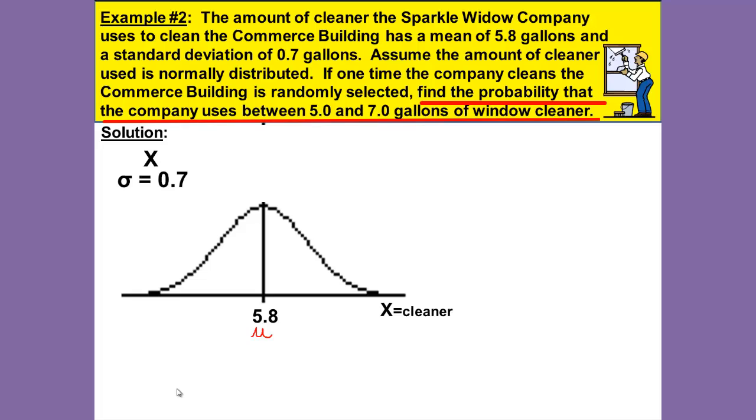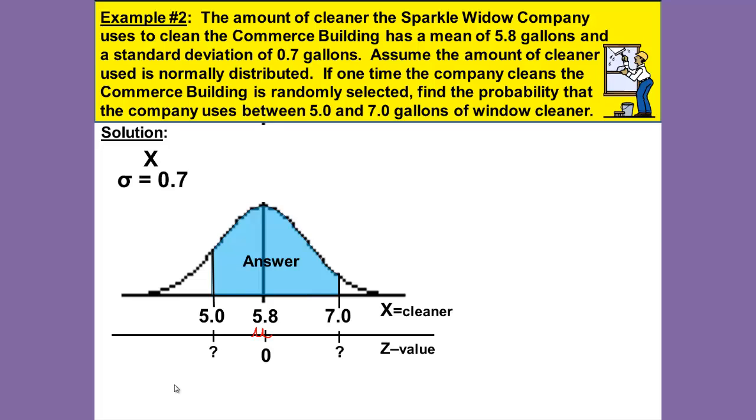Mark those on your number line appropriately, 5 being below 5.8 and 7 being above. Don't worry so much about being to scale but just mark them. Then we want to shade between those because that's what we're looking for, so our answer will be between those two values. Then we'll mark our Z score and we'll need to find a corresponding Z value for each X value.